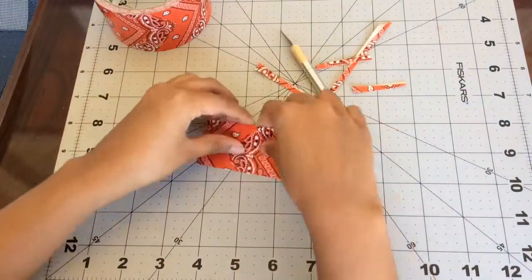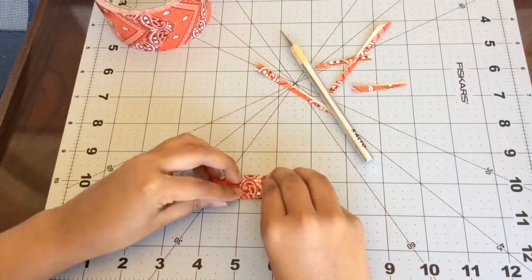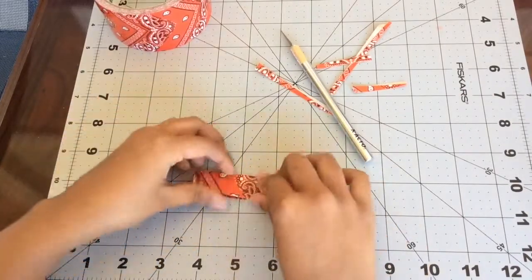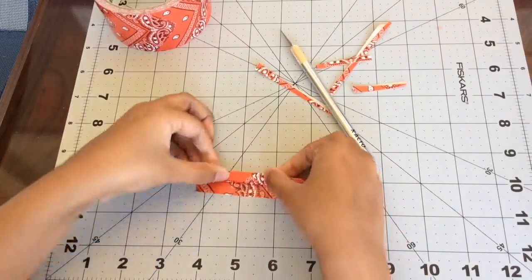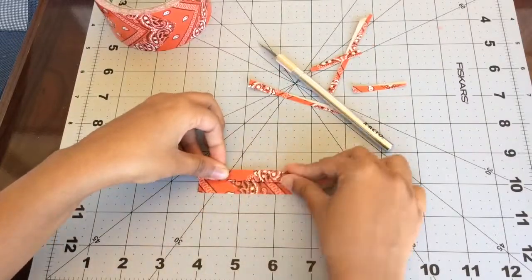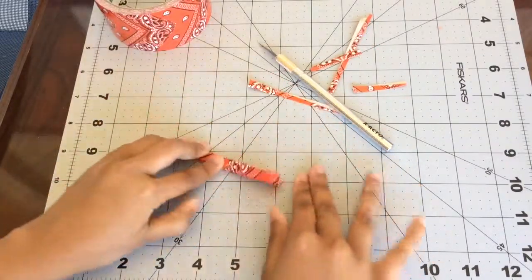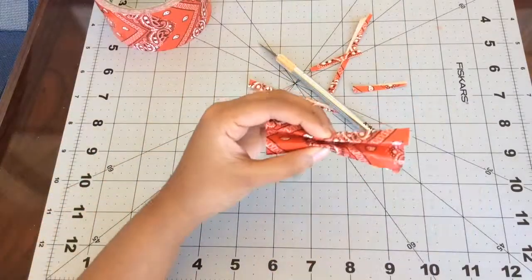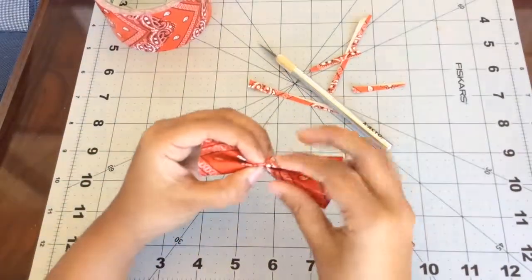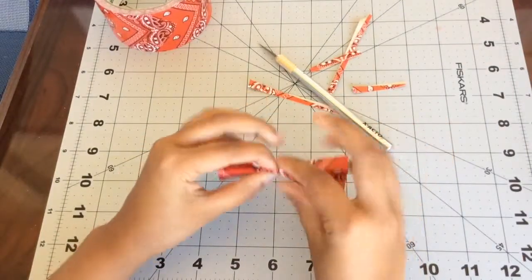Now we are going to make an accordion fold. So fold the duct tape sheet in half, crease, and then fold that in half twice. Now crease it so that it doesn't come off.